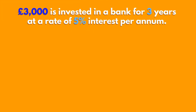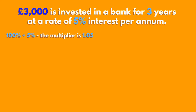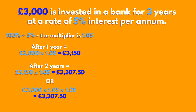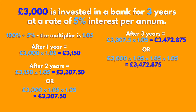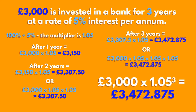£3,000 is invested in a bank for 3 years at a rate of 5% interest per annum. To work out the total interest, we need to follow these steps: 100% plus 5% gives us the multiplier 1.05. This is the situation after 1 year, and after 2 years we get this. At the end of the third year, the total is £3,472.875. The change over 3 years can be represented in an equation.